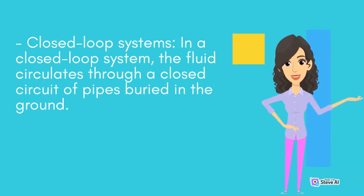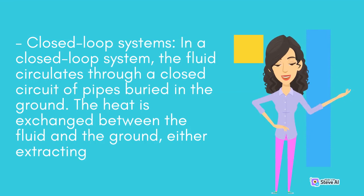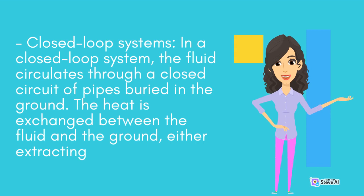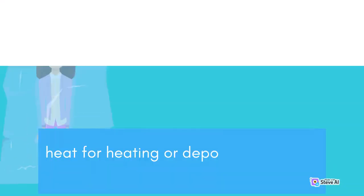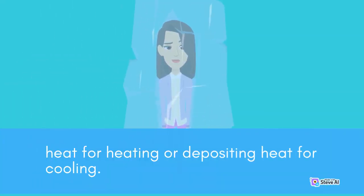In a closed-loop system, the fluid circulates through a closed circuit of pipes buried in the ground. The heat is exchanged between the fluid and the ground, either extracting heat for heating or depositing heat for cooling.